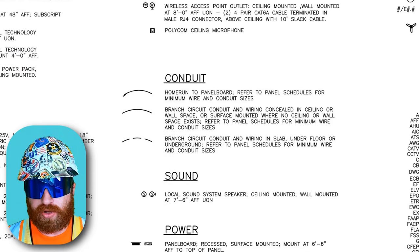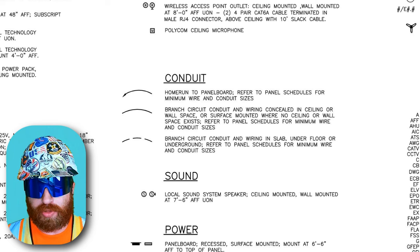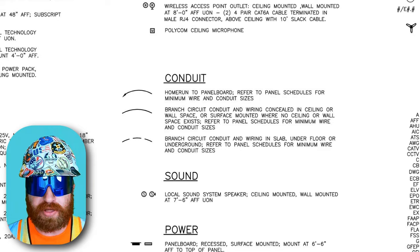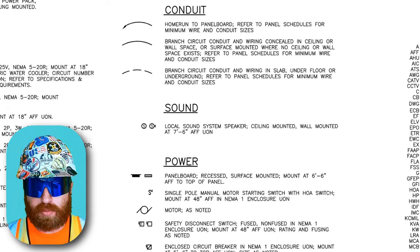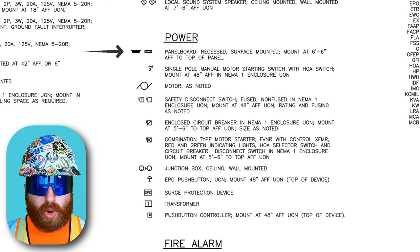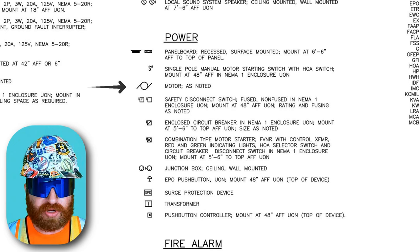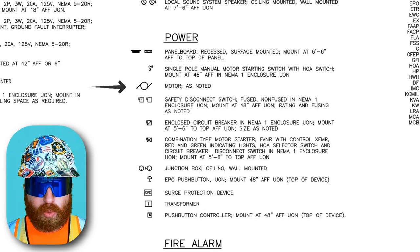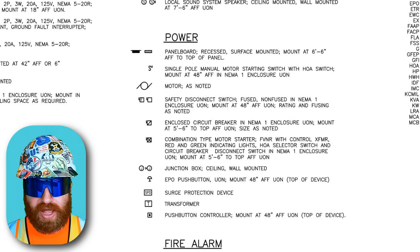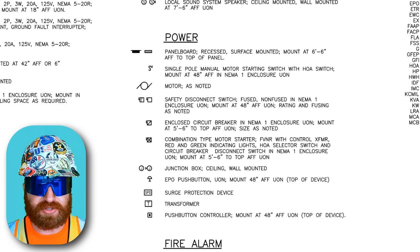Then we have actual conduit symbols — conduit is the pipe that wire gets pulled through. A home run is a direct path from the end termination all the way back to the electrical panel. Continuing, we have additional power symbols such as panel boards, motors serving equipment like pumps, and safety disconnects — a manual disconnect to shut down a system in the event of an emergency.